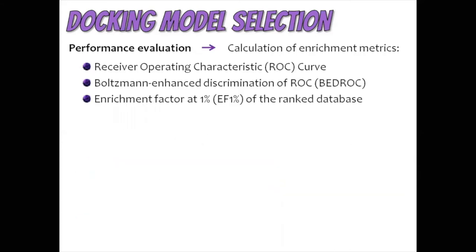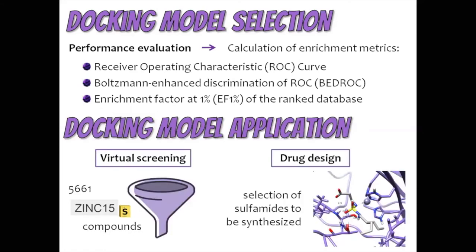We evaluated the performance of the model by calculating classical enrichment metrics like the receiver operating characteristic curves. Then we applied the model to a virtual screening on a thin subset of sulfur-containing compounds. In addition, we used the model to guide the selection of sulfamides to be synthesized as potential CA7 inhibitors, by analyzing the interactions predicted by the docking model of the new proposed structures within the enzyme.